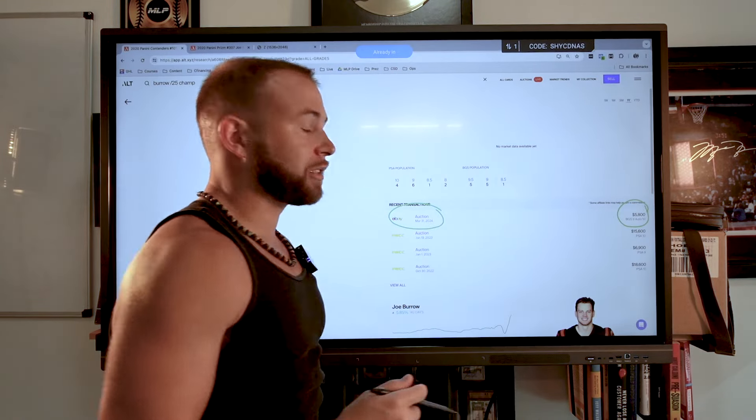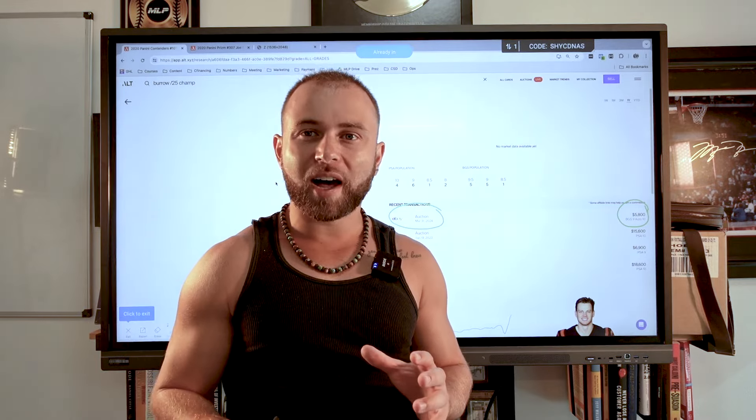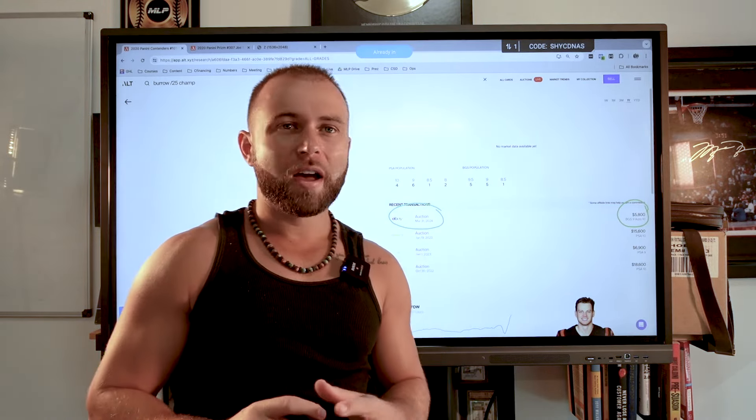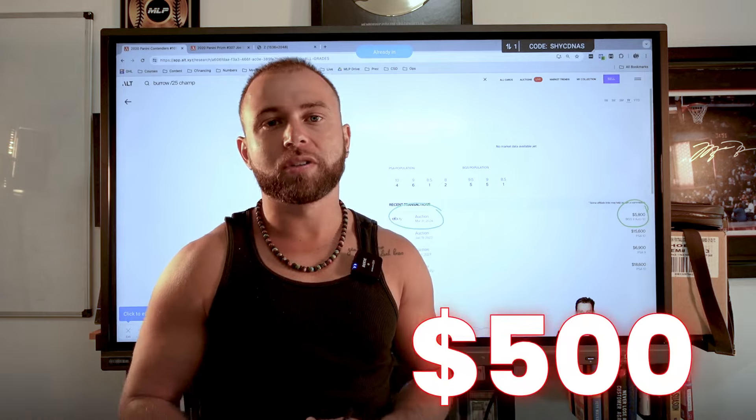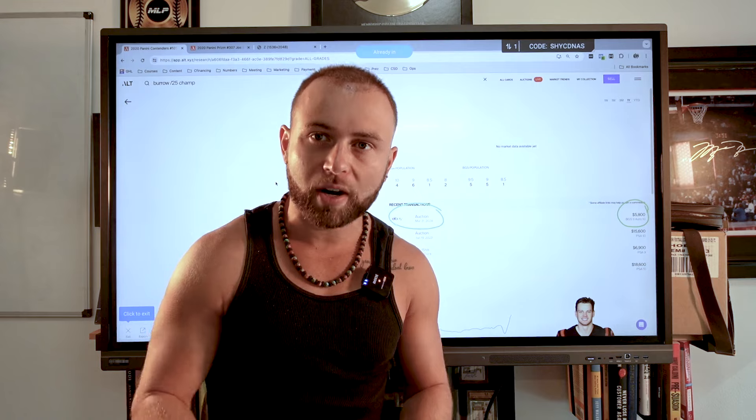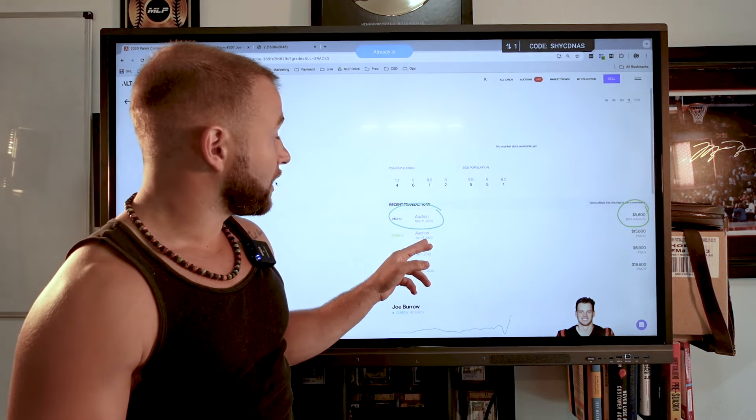This is a BGS-9 that sold for about $5,800 and usually a BGS-9 and a raw card are about comparable. So maybe the card I paid was worth about $6,000 but I paid $6,500 for it so I overpaid by probably $500 give or take. But why would I do that? Well, it's because I was actually getting the card graded and if you look here, check this out, last year, January 19th, 2023, a PSA 10 sold for $15,000.